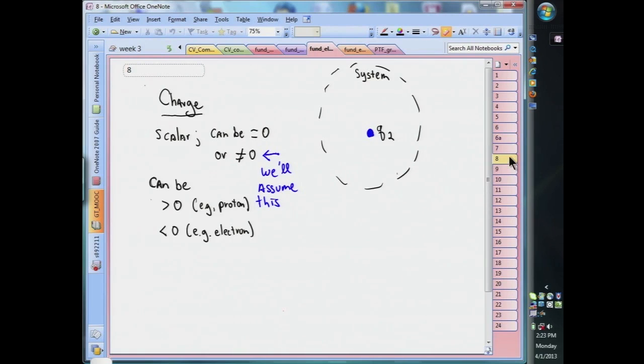That non-zero charge can be positive, like it is for a proton, or negative, like it is for an electron. Now charge is a fundamental quantity, which means it has its own physical dimension with the corresponding unit called the coulomb.